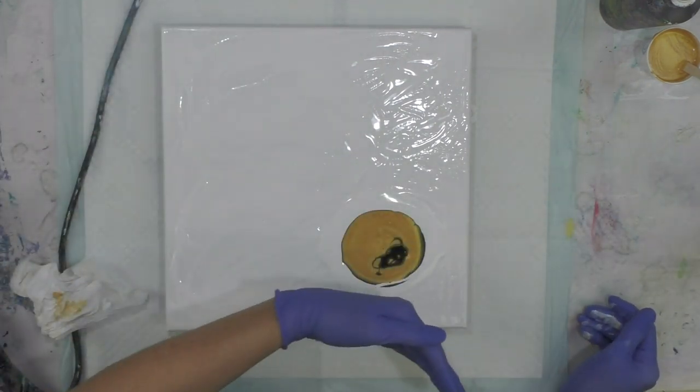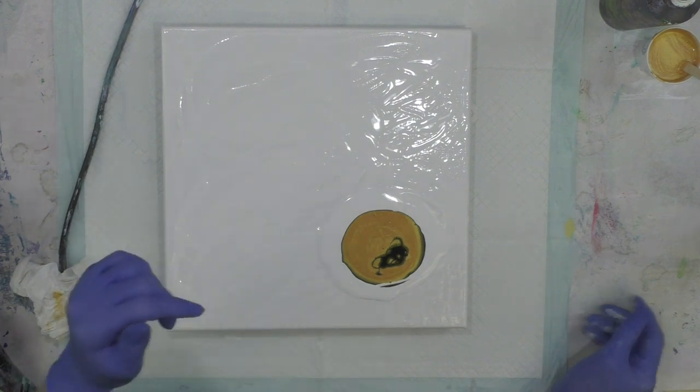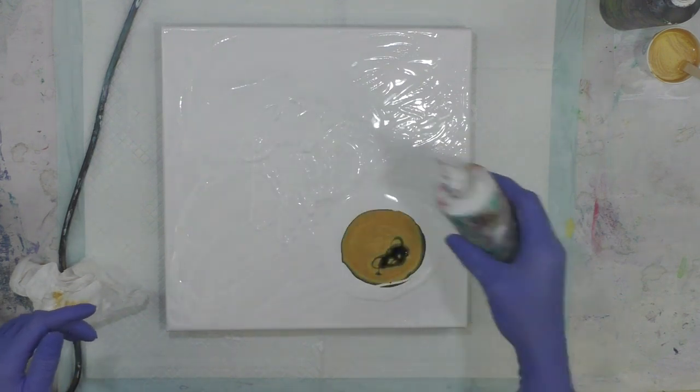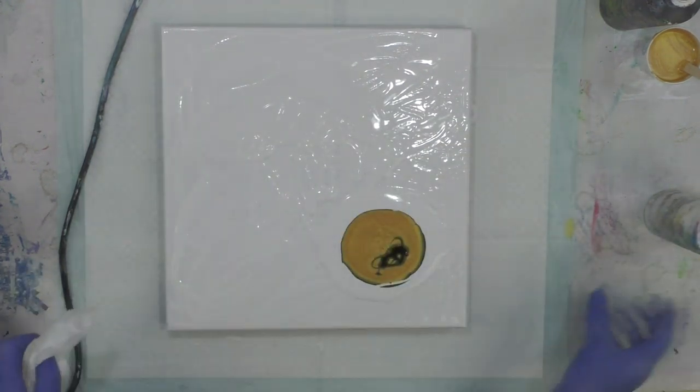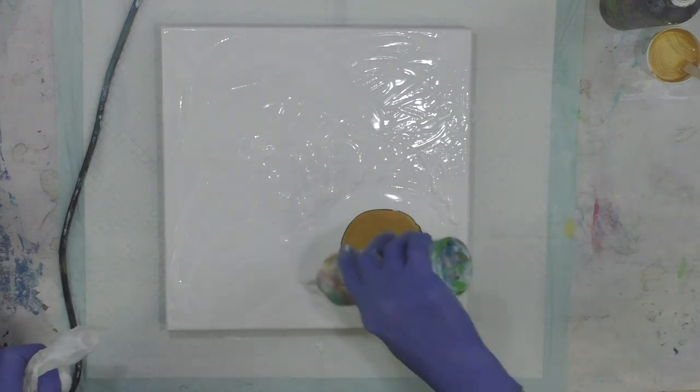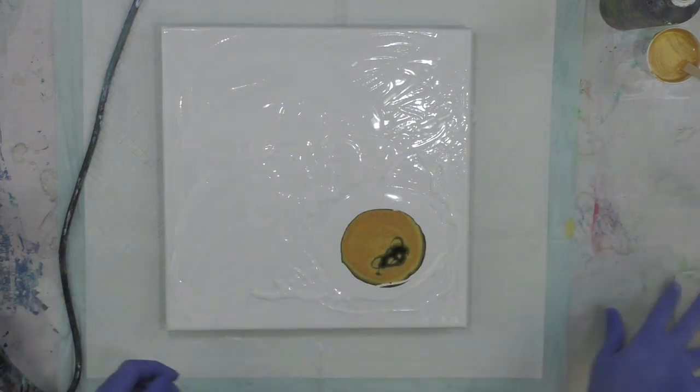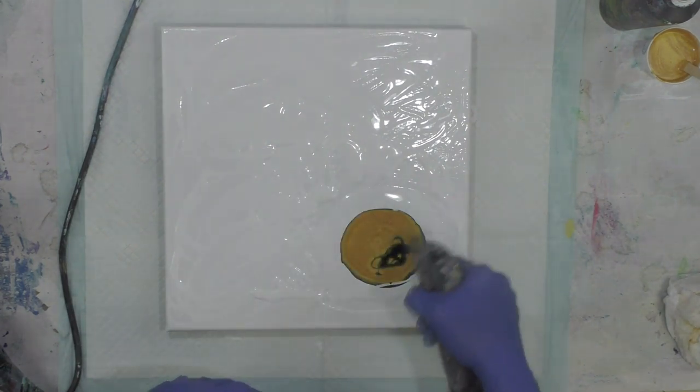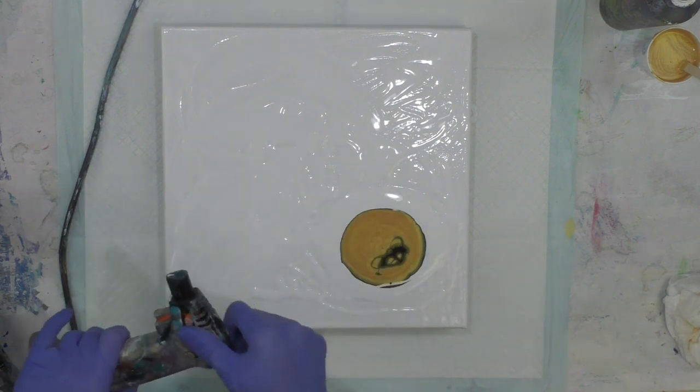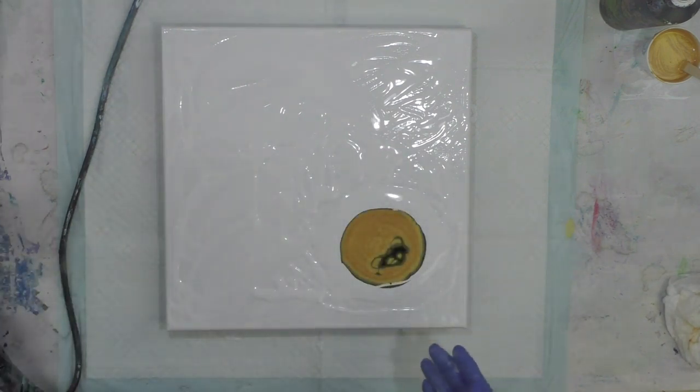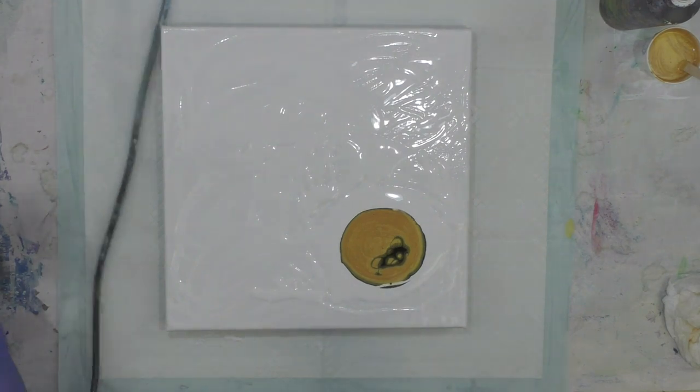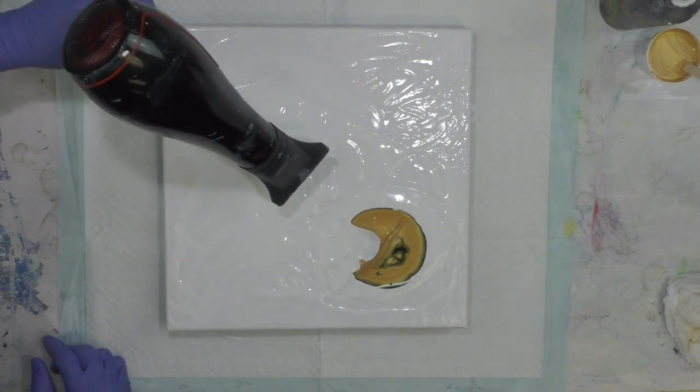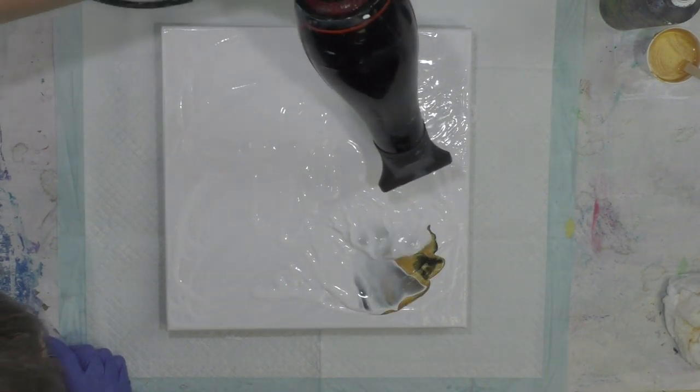We're going to blow towards the corner first a little bit. I'll add some more white just in case, and then we're going to blow back this way. Let me pop any air bubbles before we get started. This does not have silicone or OGX in it - it's strictly paint and Floetrol. Okay, let's go.